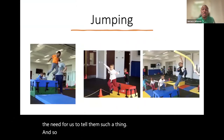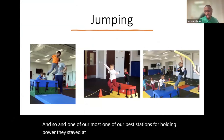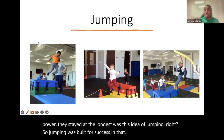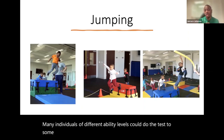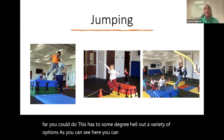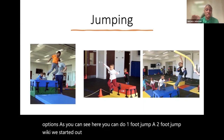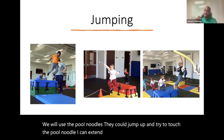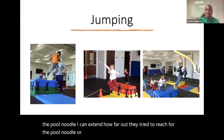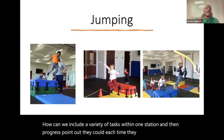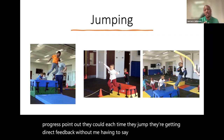One of our best stations for holding power — where children stayed the longest — was jumping. Jumping was built for success because individuals of different ability levels could do the task to some degree, whether jumping high or far. There were many variety of options: one-foot jump, two-foot jump, starting with one mat then two or three, using pool noodles to jump and touch, adjusting distance. We used colored mats to see if they could hit the blue or yellow. Each time they jumped, they got direct feedback about their progress without me having to say anything.